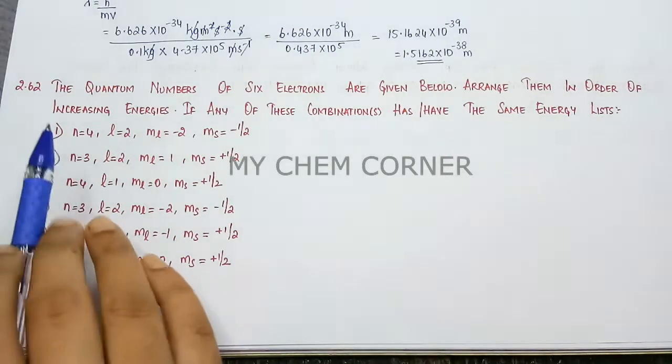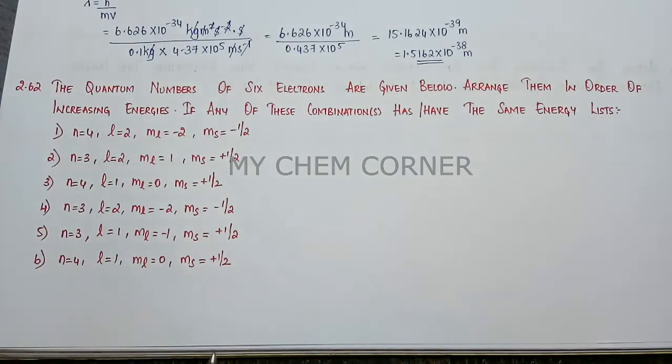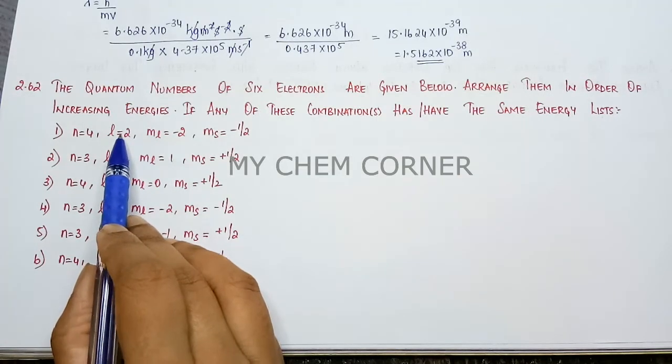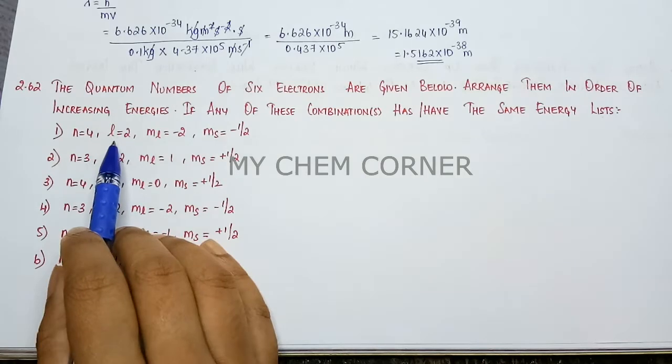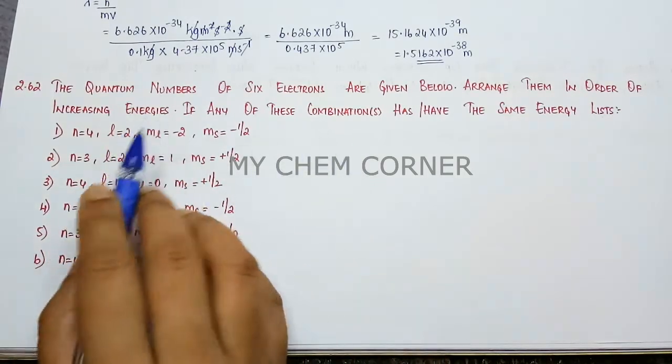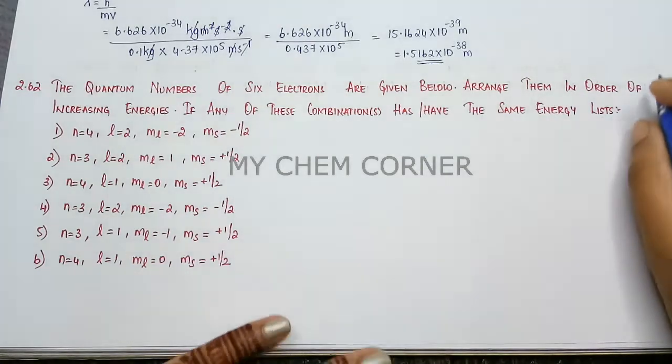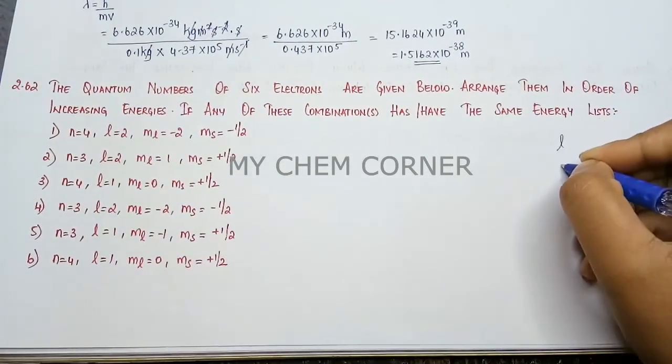First thing we will do: when you have the principal quantum number, that will give us the energy. Looking at your azimuthal quantum number, that is your l value, you can decide the orbital. At the end of the page, you can write down the l value: if it is 0, 1, 2, 3.